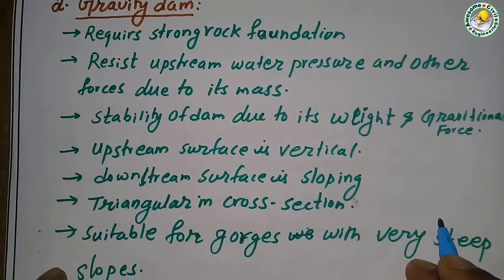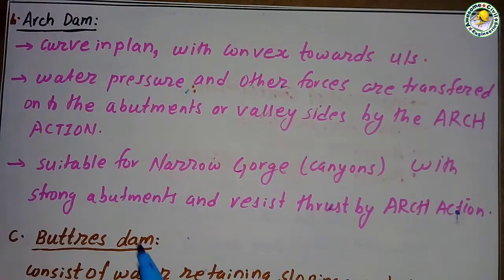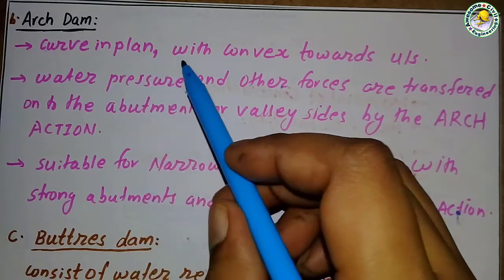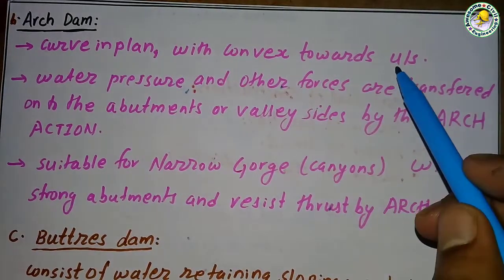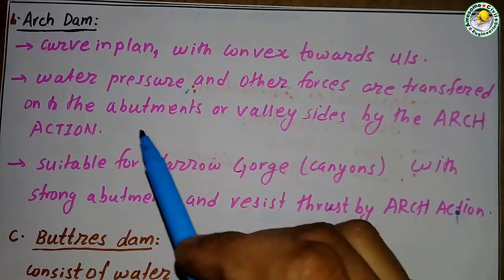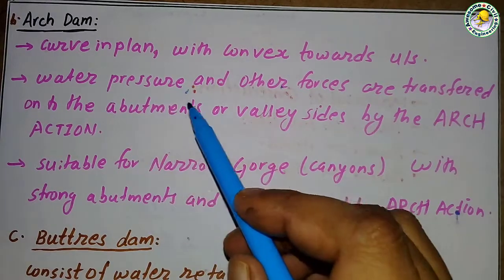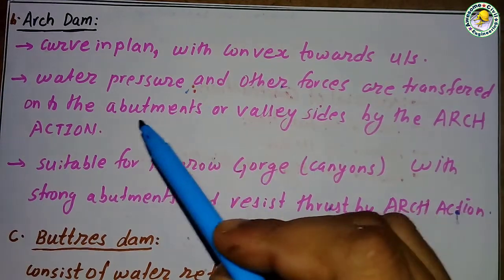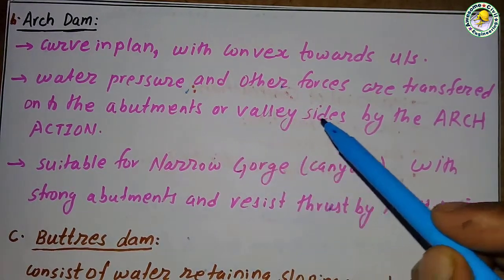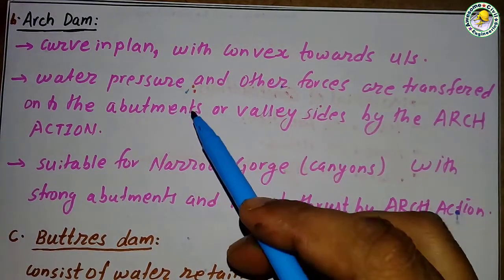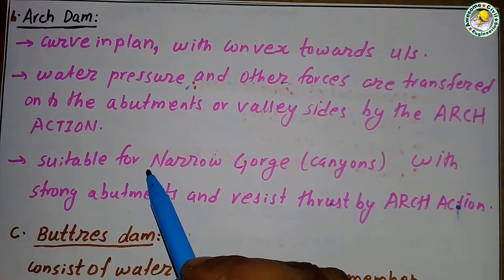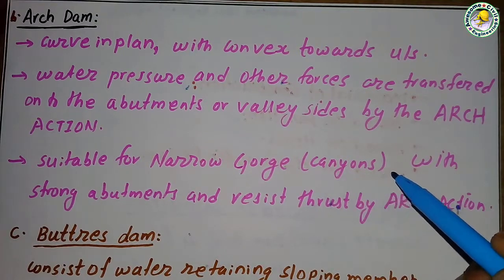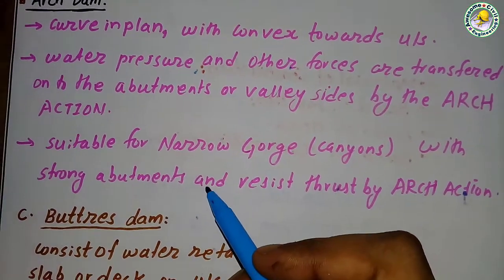A gravity dam has a triangular cross section and is suitable for gorges with very steep slopes. An arch dam curves in plan with the convex side towards the upstream of the river. Water pressure and other forces are transferred to the abutments or valley sides by arch action.